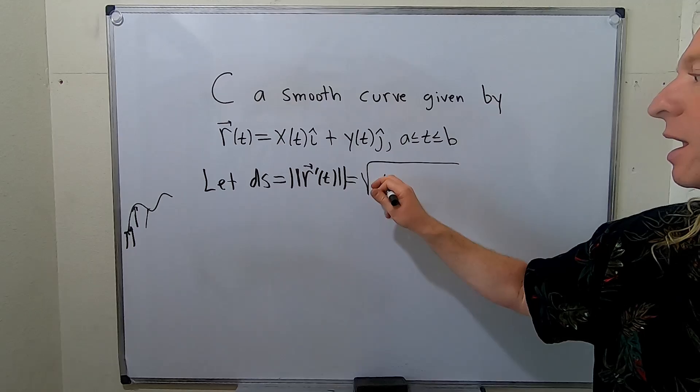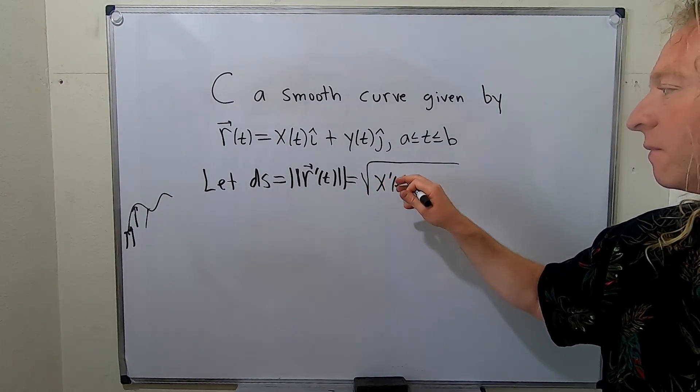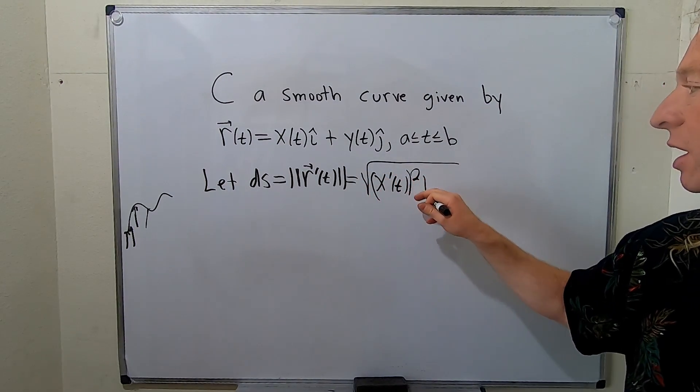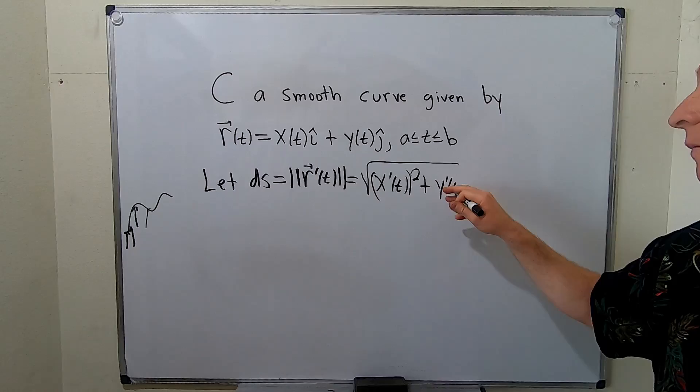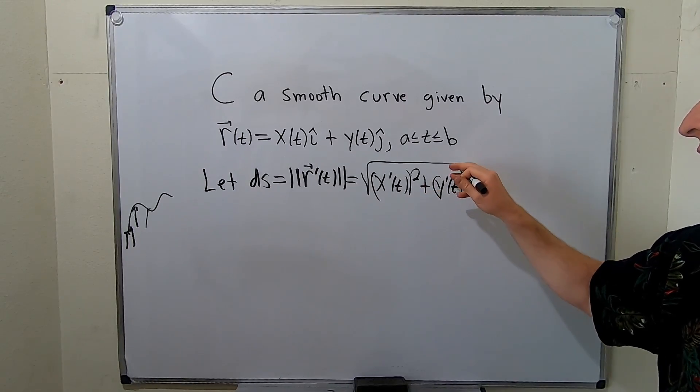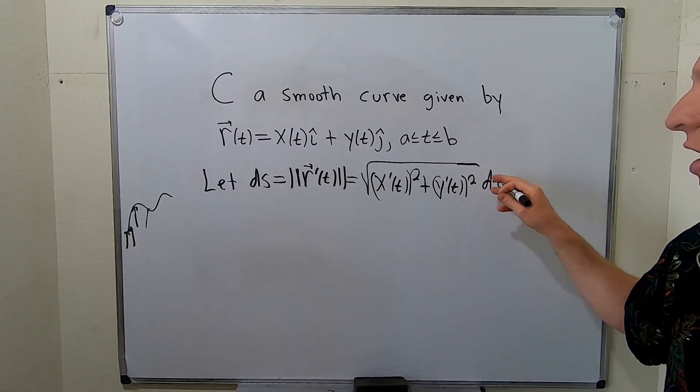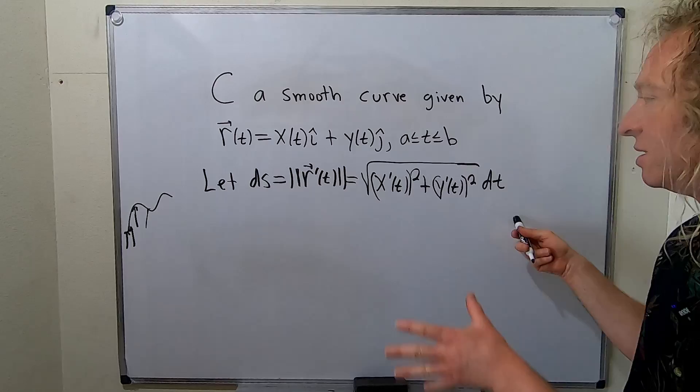So it would be x'(t) squared plus y'(t) squared dt. So this is the notation we often use. So ds is equal to this.